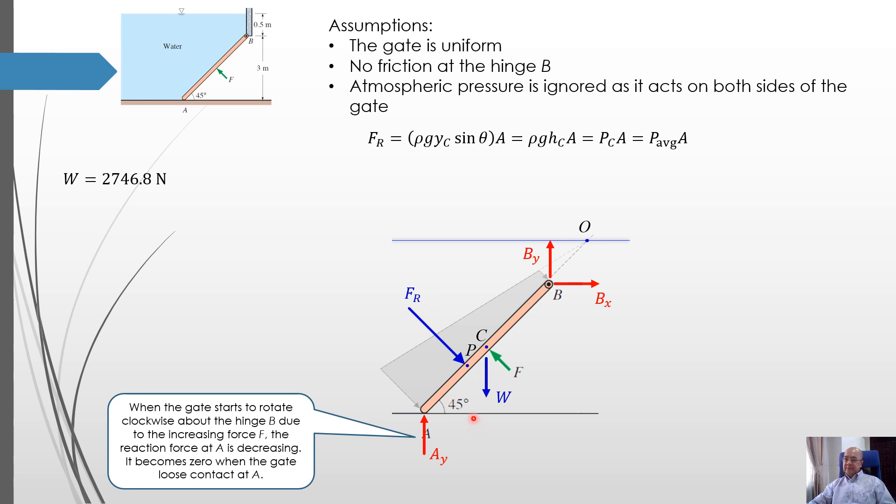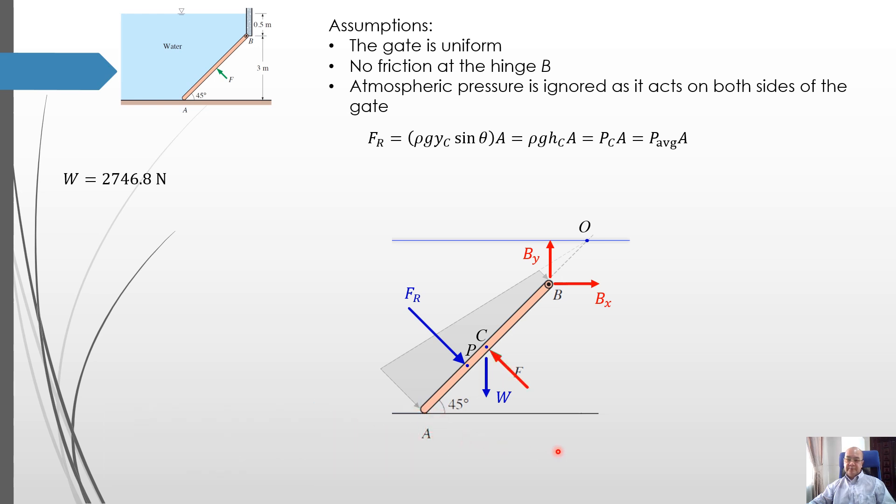One more thing. When this gate starts to open, starts to rotate about point B, it means the contact at A will be reduced. This part will be lifted. This is due to the increasing force at F. The increasing force at F will reduce the reaction force at A. And when the gate loses contact with the floor, the reaction force at A will be zero. So this is our final free body diagram.